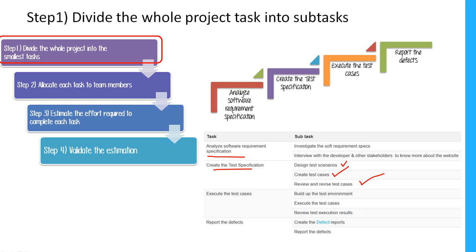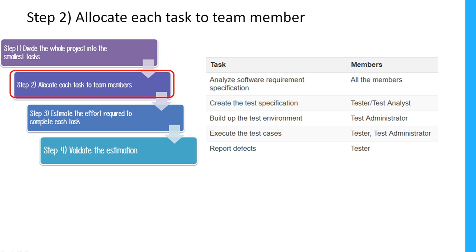Once that is done, the next step is to allocate these tasks to team members. For example: all members analyze requirements; a tester creates the test specification; an administrator builds the test environment; a tester or test administrator executes test cases and reports defects. Each and every activity or task is allocated to specific team members.